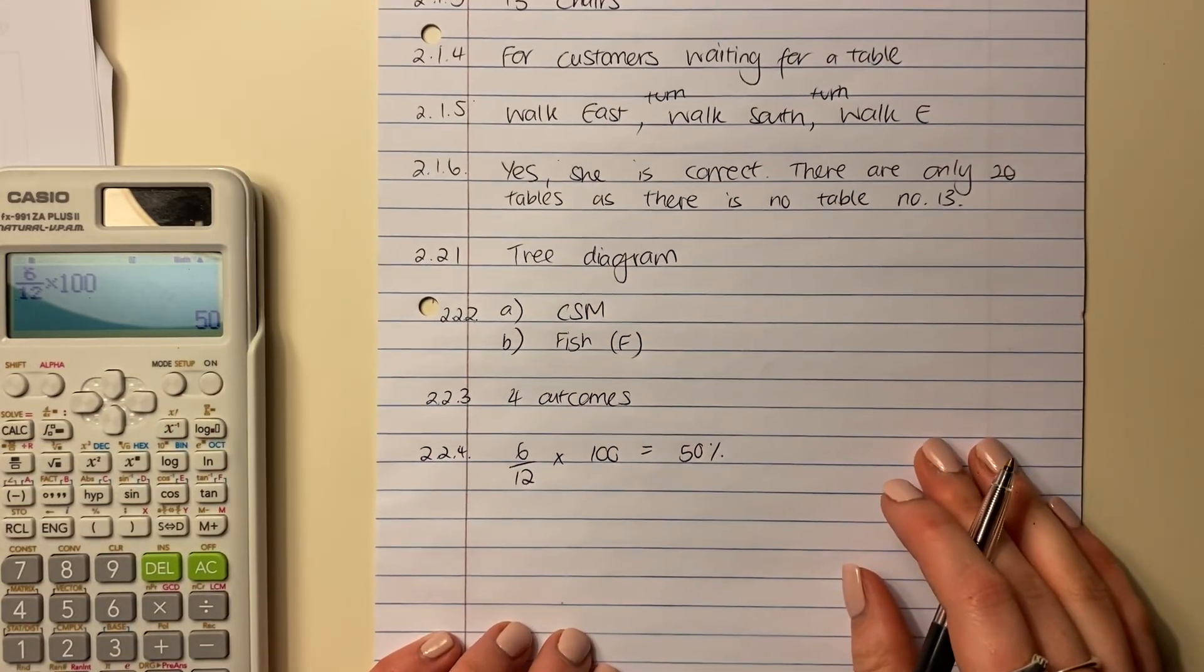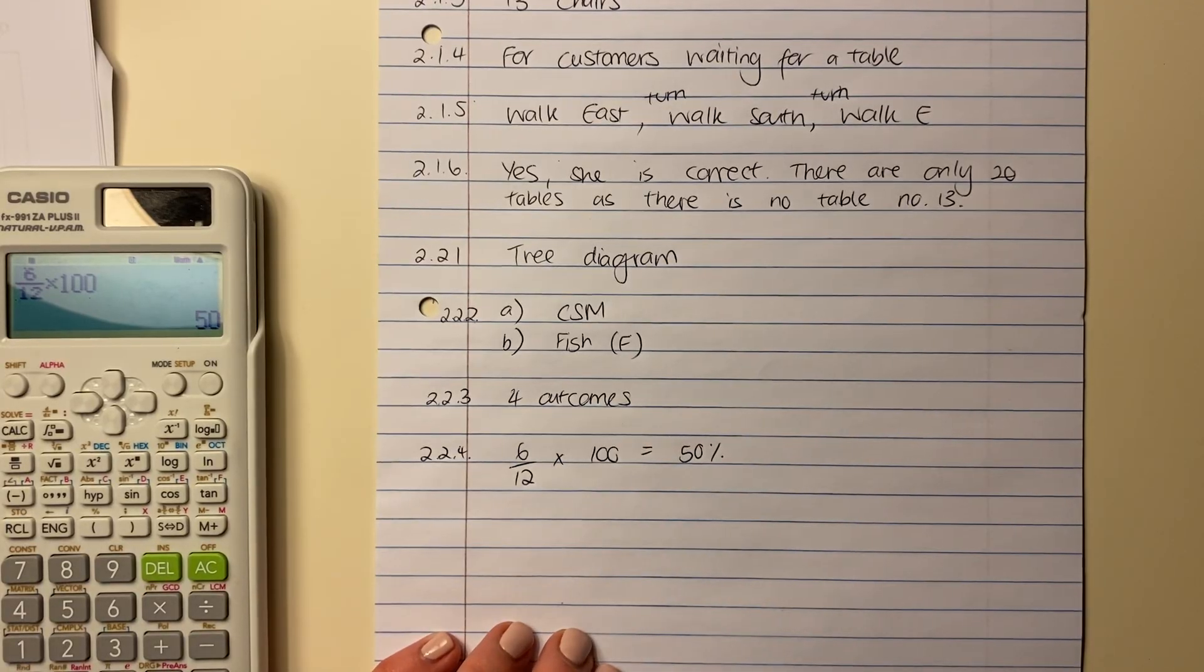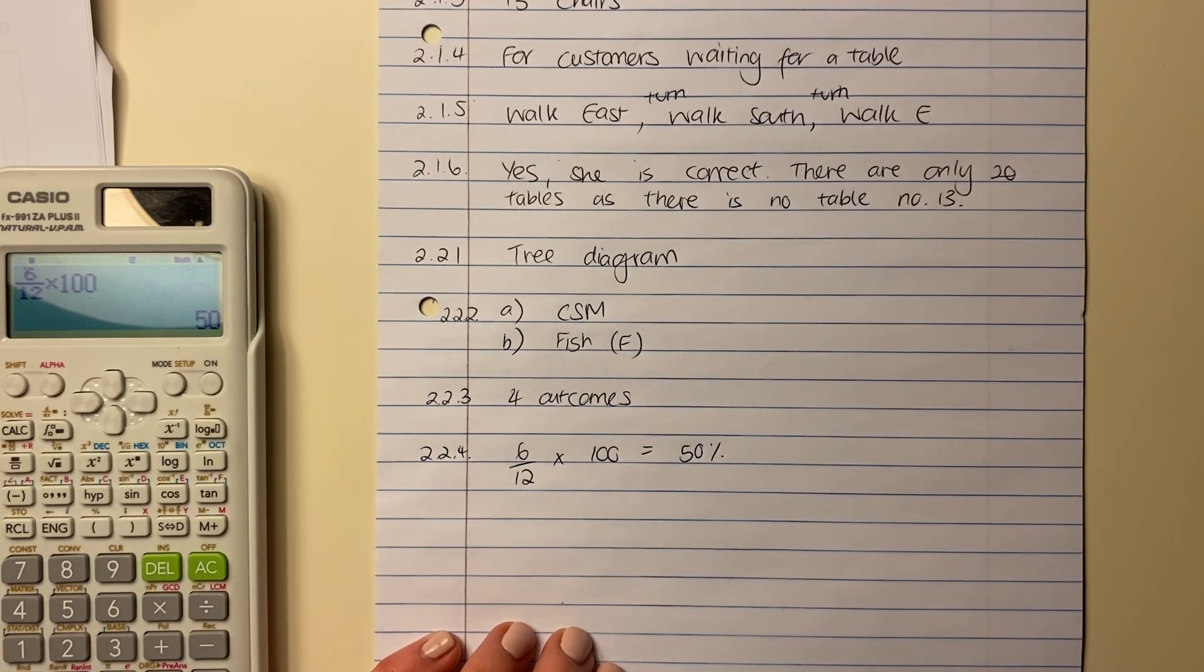Six over 12 times it by 100, and you get to 50%. Don't forget your little percentage sign. So there's a 50% chance that you will get Malva pudding, or choose Malva pudding. That's that question done. Let's move on.